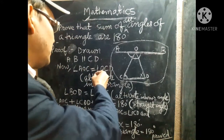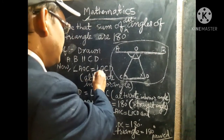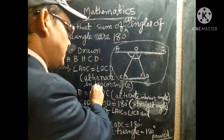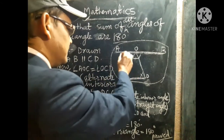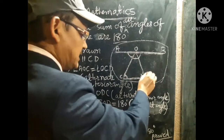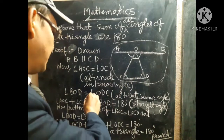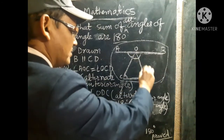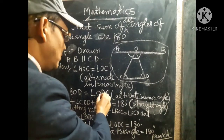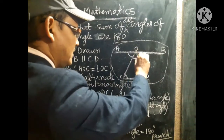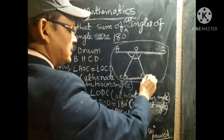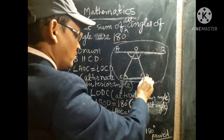So angle AOC is equal to angle OCD. Next, angle BOD is equal to angle ODC. Again, AB is parallel to CD, so these angles will be equal.